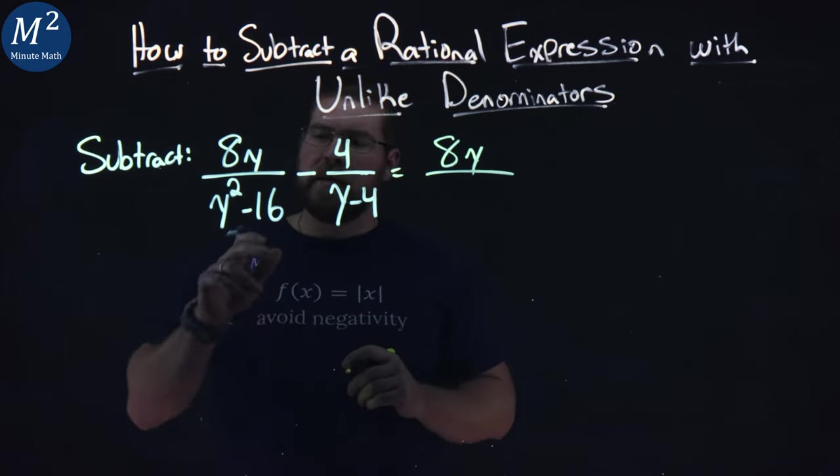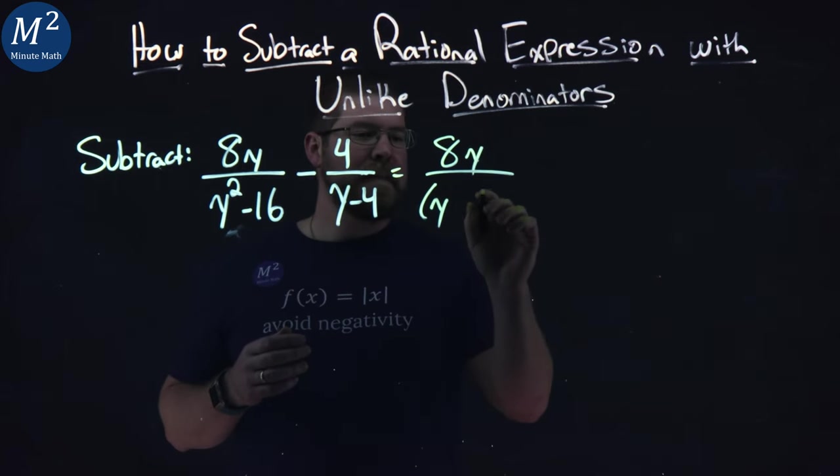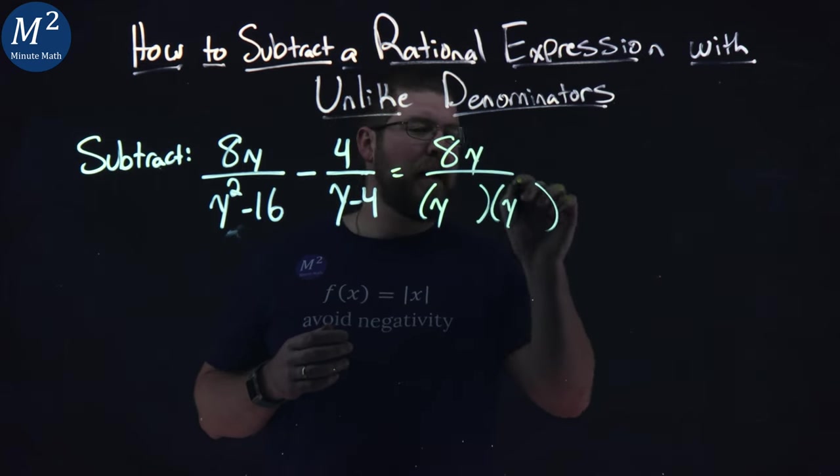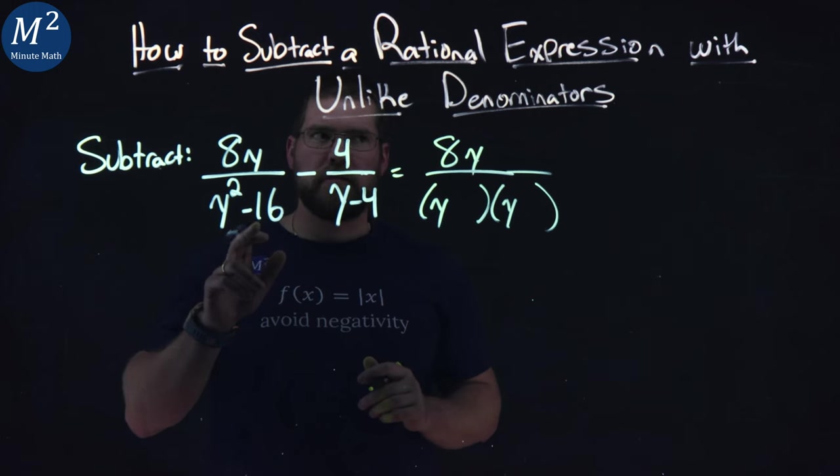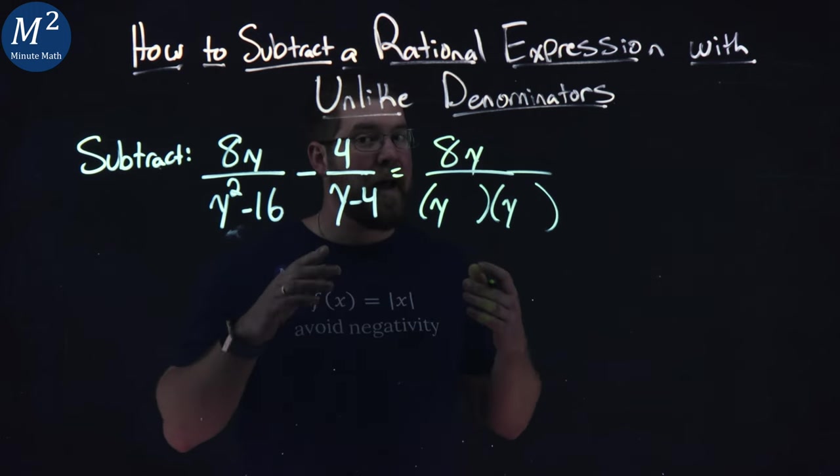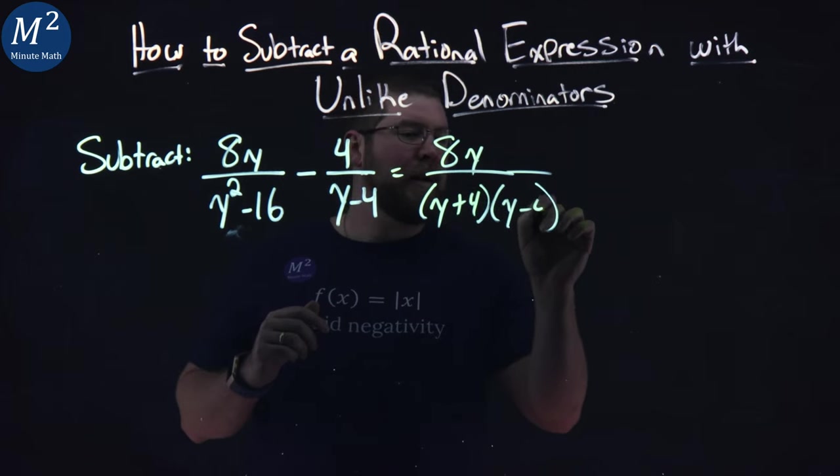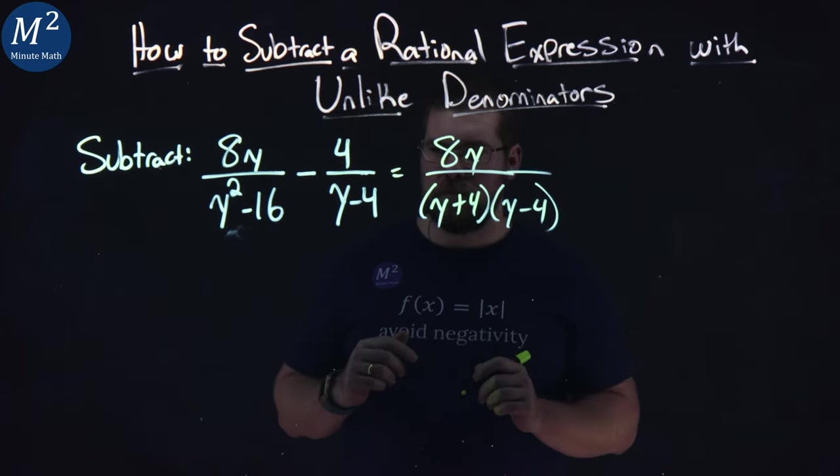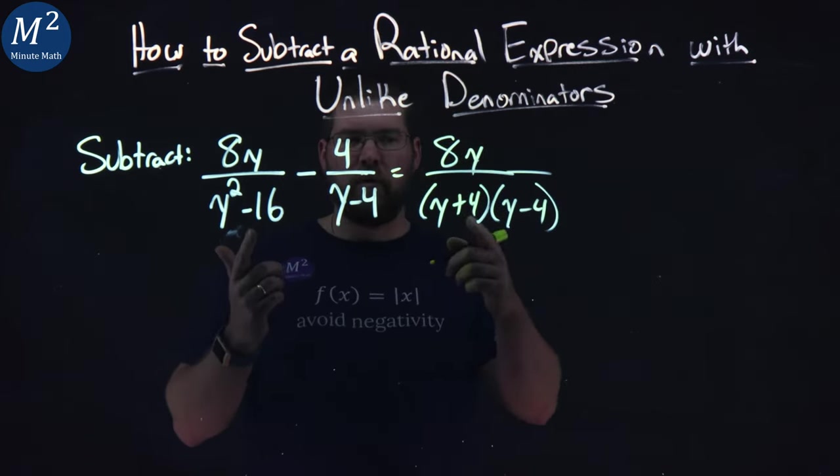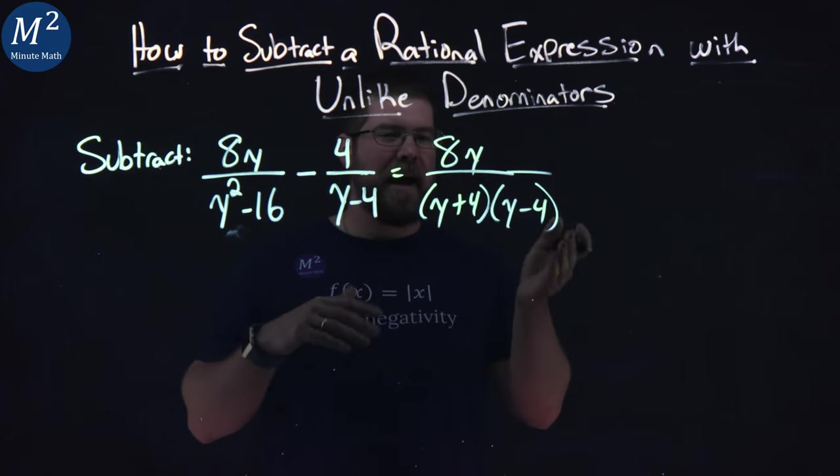8y stays in the numerator. The denominator y squared minus 16 - how can I factor that? Well, two numbers that multiply to negative 16 and add to 0 (the b value) are plus 4 and minus 4. Y minus 4 times y plus 4 gives negative 16, and they add to get 0.